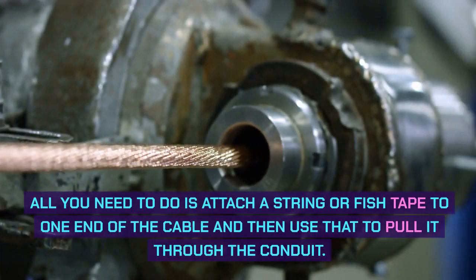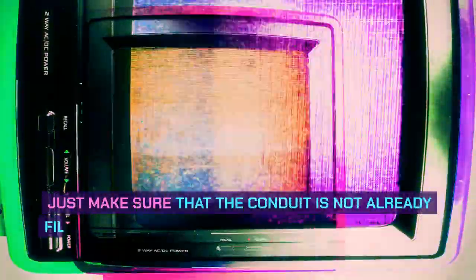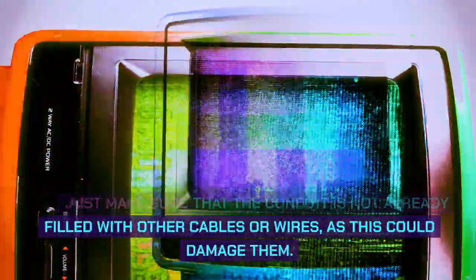To use existing conduits, all you need to do is attach a string or fish tape to one end of the cable, then use that to pull it through the conduit. Just make sure the conduit is not already filled with other cables or wires, as this could damage them.